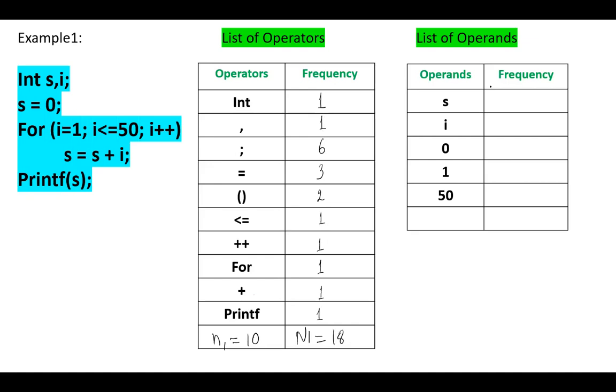Next here, we have the list of operands. The operand S is repeated 1, 2, 3, 4, 5 times. I is repeated 1, 2, 3, 4, also 5 times. The operand 0 is repeated one time, 1 also one time, and 50 one time.